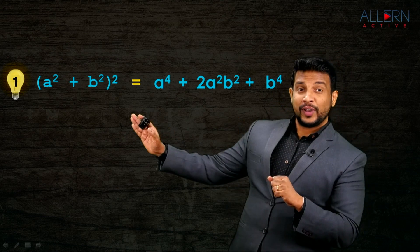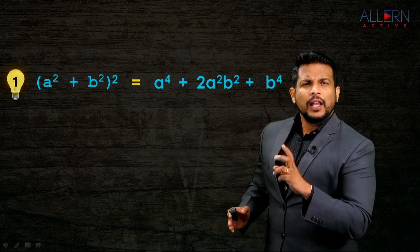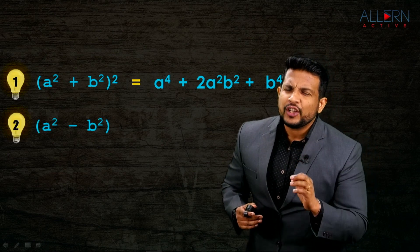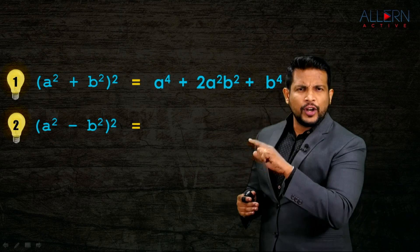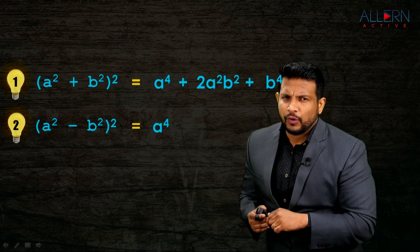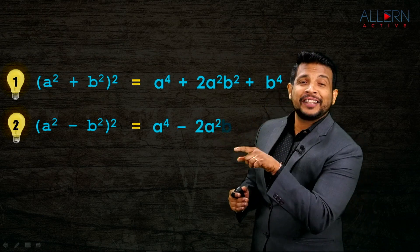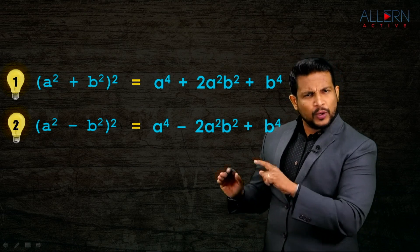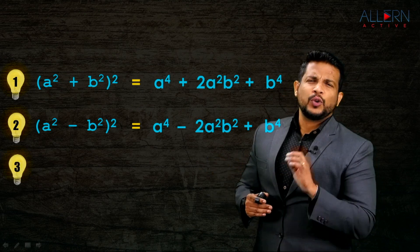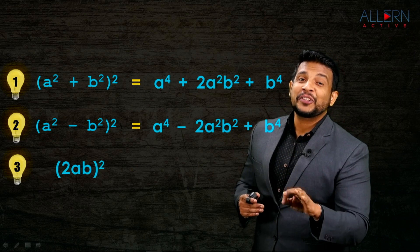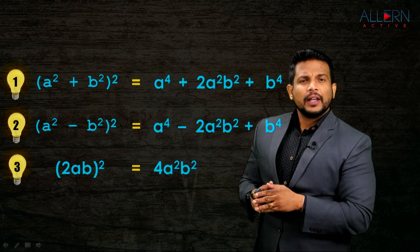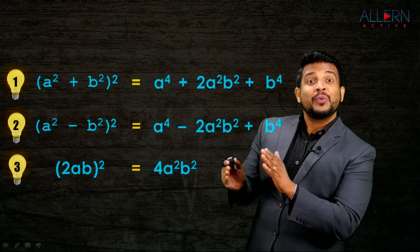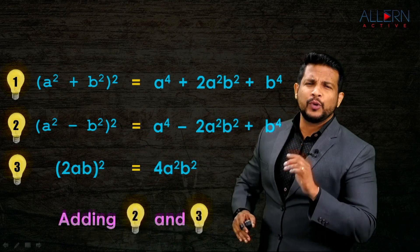Now for the last number 2AB: taking its square gives 4A²B². This is the square of the largest number, and we have the squares of the other two numbers. We need to add results two and three together. Let's add the left side and add the right side.